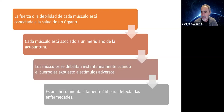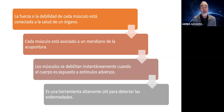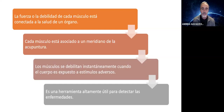Como sabemos que en acupuntura hay 12 meridianos principales más el Remai y el Dumai, cada uno de estos meridianos está conectado con un músculo. Cada músculo está asociado a un meridiano de la acupuntura, y así se han empezado a testar los meridianos con los músculos. Como cada meridiano está conectado con la salud de un órgano, por ejemplo el meridiano del intestino delgado y del corazón con el elemento fuego, ahí tenemos información sobre la salud del órgano. Cuando estos músculos que estaban previamente fuertes los ponemos en contacto con una sustancia nociva, se debilitan instantáneamente durante tres segundos.